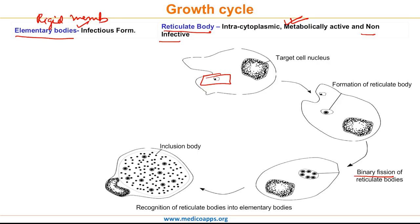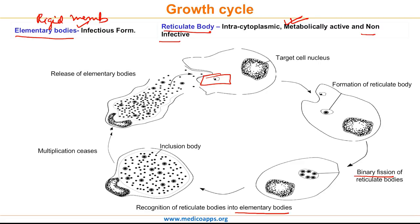After division, the reticulate body becomes the elementary body. Then multiplication inside the host cell ceases. The elementary bodies are now released by reverse endocytosis. These infectious elementary bodies can then infect other host cells and continue the cycle. Typically, the entire cycle takes around 24 to 48 hours.